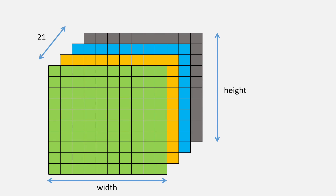There are 21 matrices — I can only show four here due to space. Each matrix corresponds to a particular category. The zeroth index (green) corresponds to background. The first is aeroplane, the second is bicycle, and so on. Each matrix is of size height × width. So there are 21 such matrices, one per class.